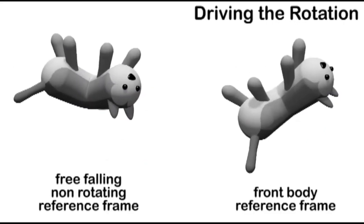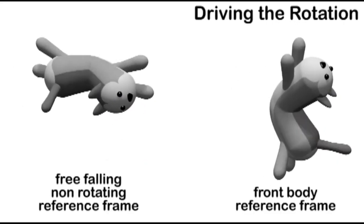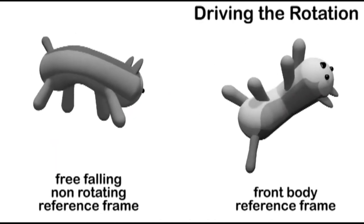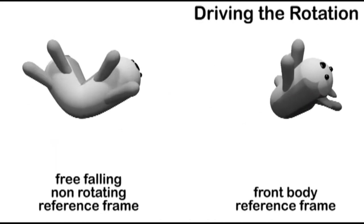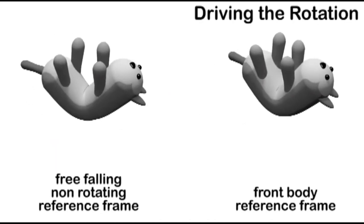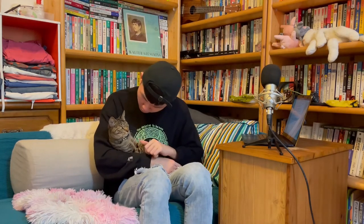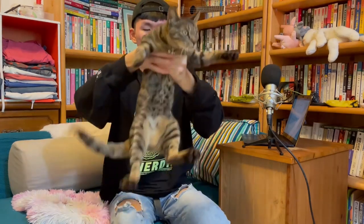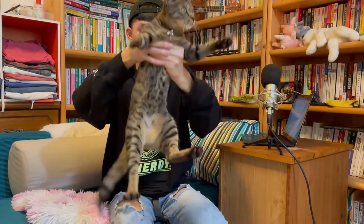If we now change to the cat's own frame of reference, the motion should look like this. This animation is actually an exaggeration of the motion, because the back bend is way less pronounced than the front bend. So to demonstrate what the actual motion looks like — the actual motion should look more like this.